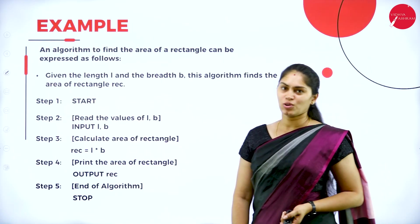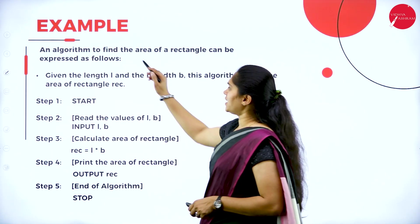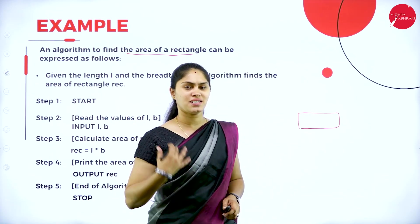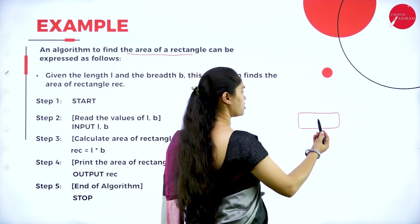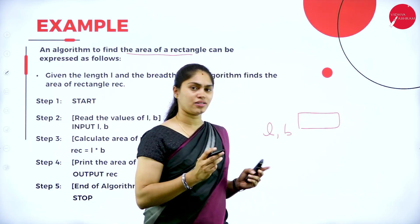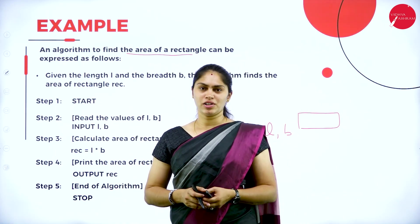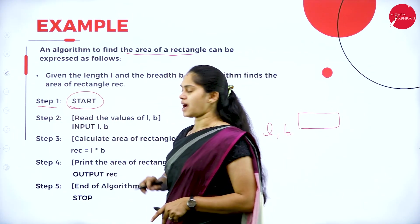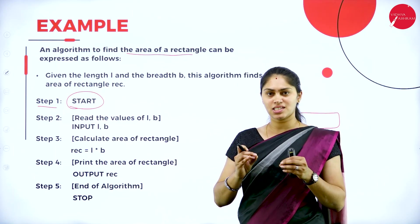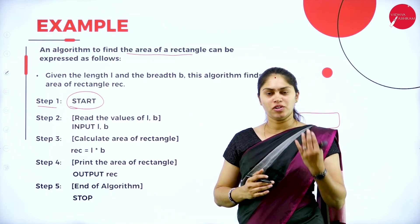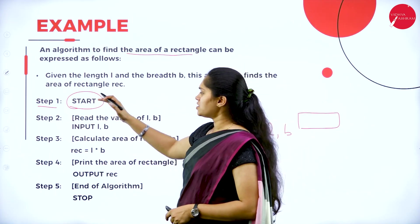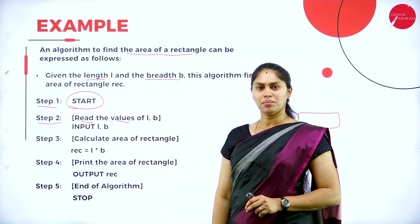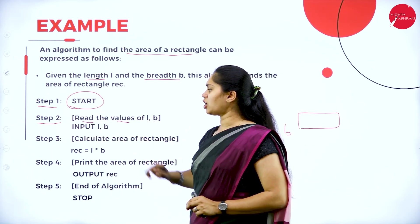Let's see how to write an algorithm with an example: finding the area of a rectangle. Before writing an algorithm, imagine: to find the area of a rectangle, you need the length and breadth, then multiply them to get the area. Step 1: Start. Step 2: Read the values for L and B, where L represents the length and B represents the breadth — this is the input step, reading input L, B.